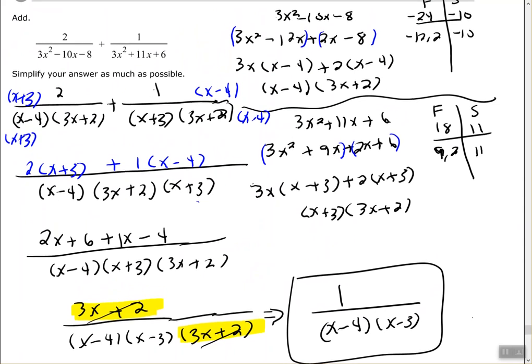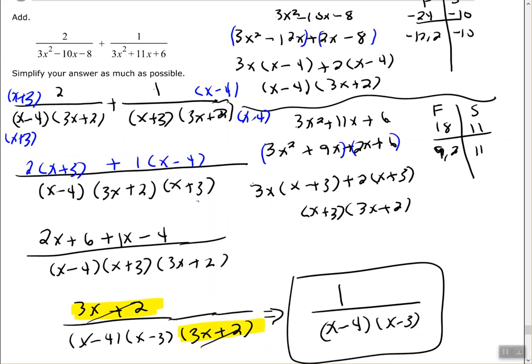Let's walk through the steps again. We factored each denominator using the AC method and got (x minus 4)(3x plus 2) and (x plus 3)(3x plus 2). We found the new common denominator using all three unique factors: (x minus 4), (3x plus 2), and (x plus 3). We determined what to multiply each fraction by — the first by (x plus 3), the second by (x minus 4). Then we multiplied, combined like terms, and canceled the common binomial.